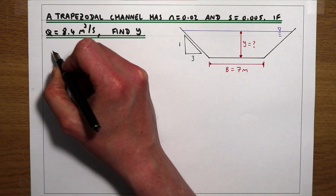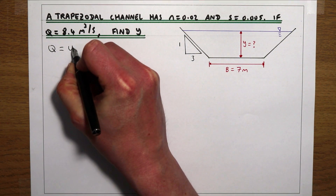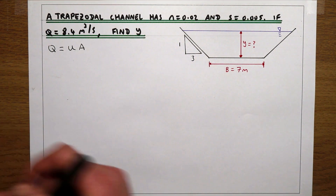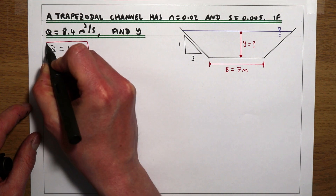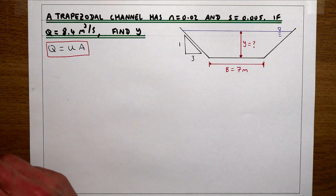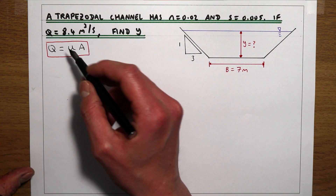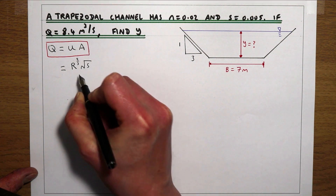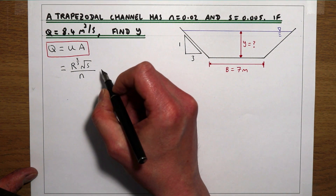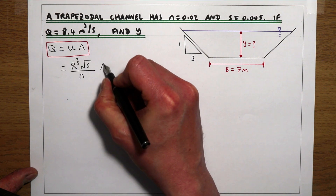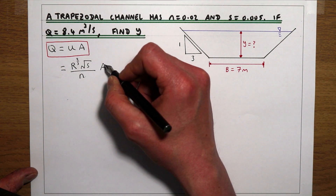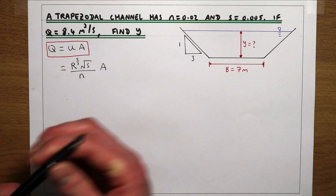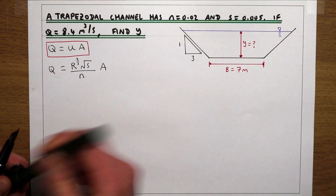The starting point for this type of example is to think about the continuity equation. We know that the discharge is going to be the velocity of water in the channel times the cross-sectional area. We can find the velocity through Manning's equation: velocity equals hydraulic radius to the power of 2/3 times the square root of the slope over the roughness. Multiplying by the area gives us discharge Q as a function of channel properties.